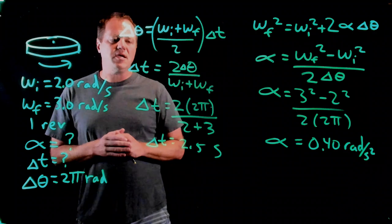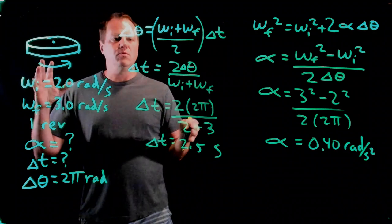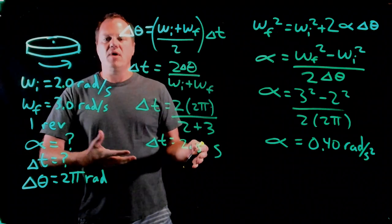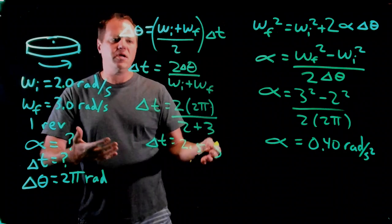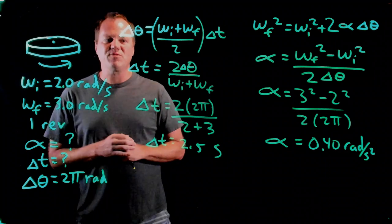And this is a lot like the linear kinematics equations, 1D or 2D, where you look for three knowns, find an equation with the three knowns along with the unknown that you're trying to calculate, and you just do your algebra, plug in the numbers, and you're done. So very similar tactic. Okay, thanks for watching.